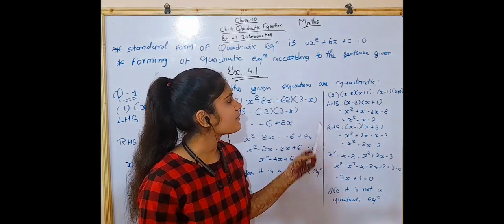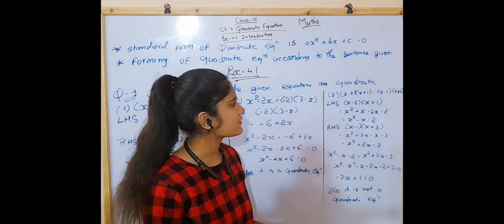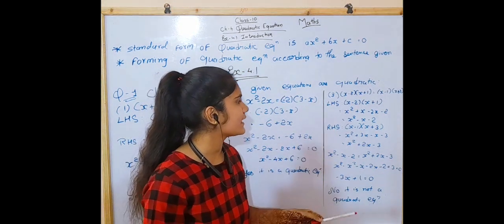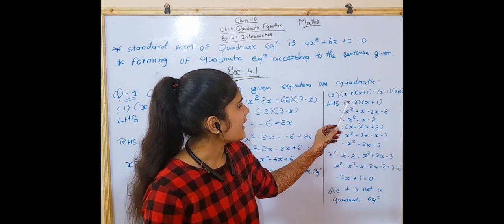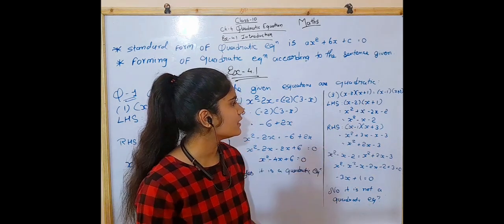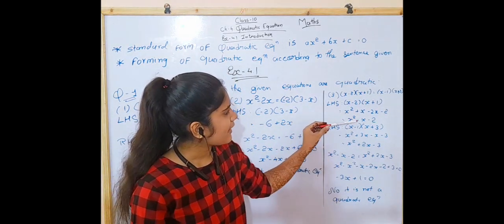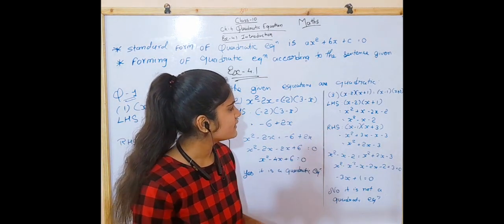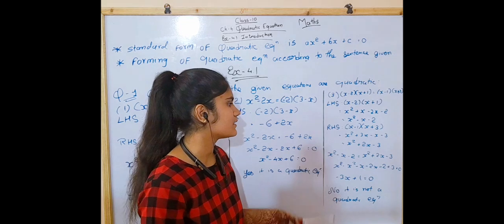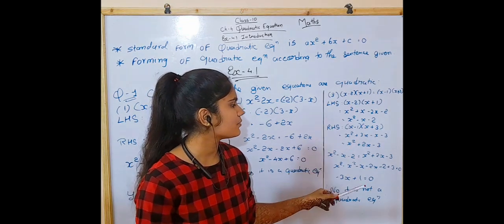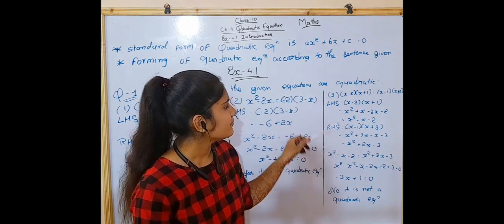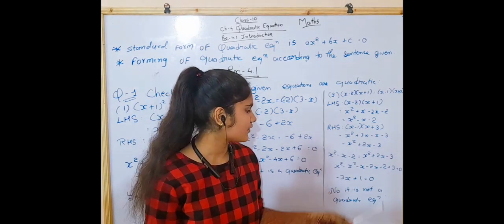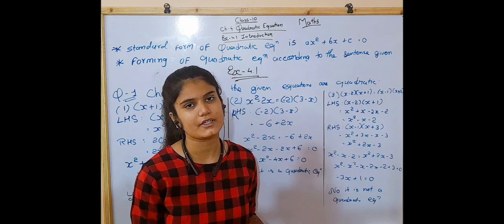Number 3: X(X - 2)(X + 1) = (X - 1)(X + 3). We equate the left-hand side: (X - 2)(X + 1) = X² - X - 2. The right-hand side: (X - 1)(X + 3) = X² + 2X - 3. Taking both together, we get -3X + 1, which is not in the form of a quadratic equation.